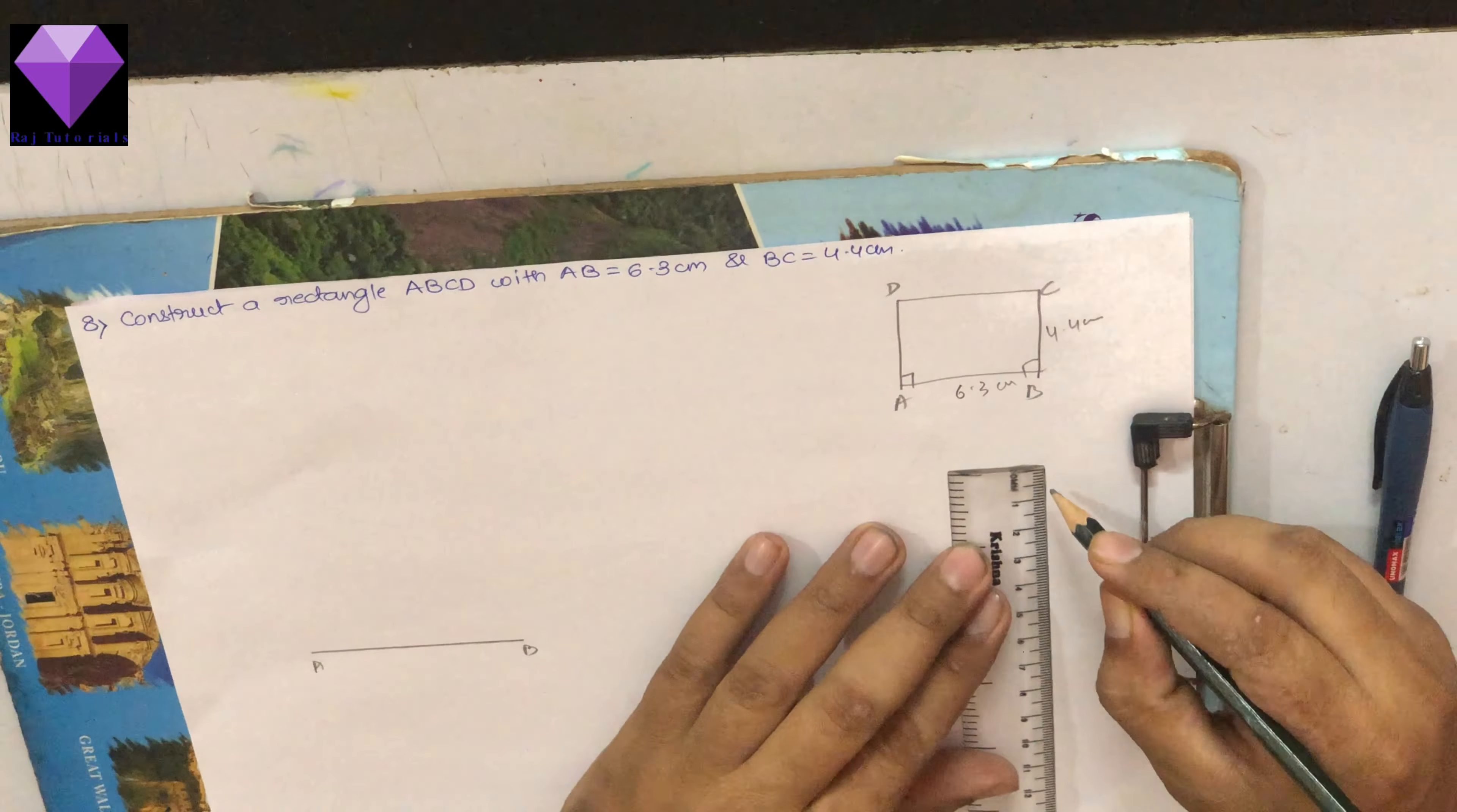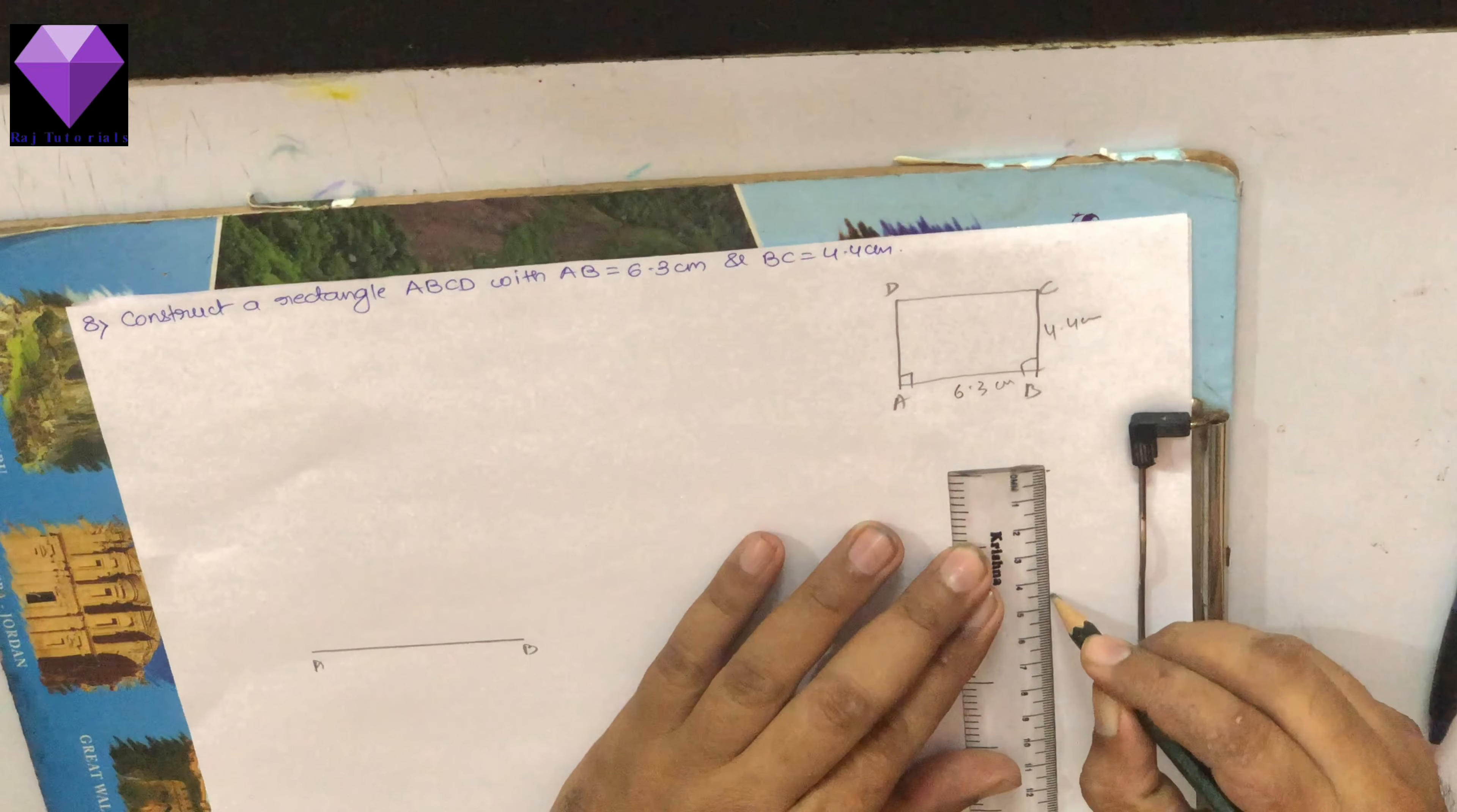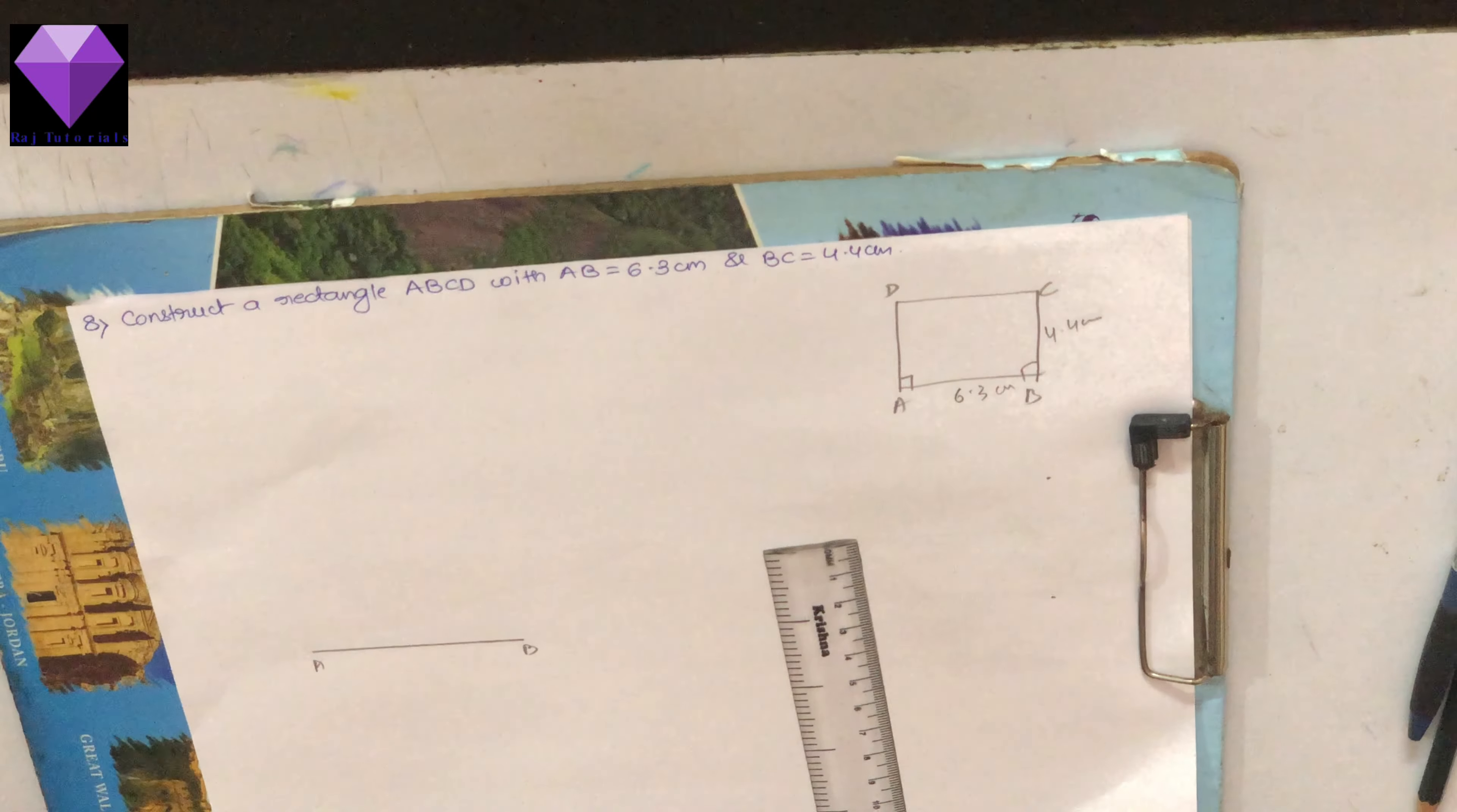Now I will need 4.4 so I am measuring that also. Now at A and B we know that in rectangle all the angles are 90 degrees, so with any radius I will make a semicircle. I will make 90 degree there at B point and A point.